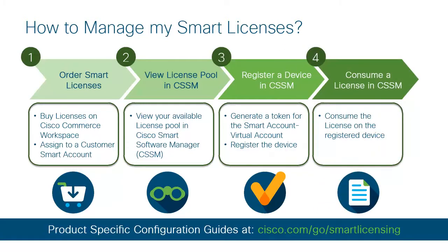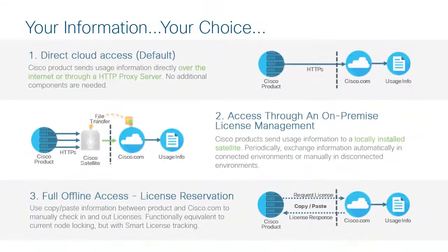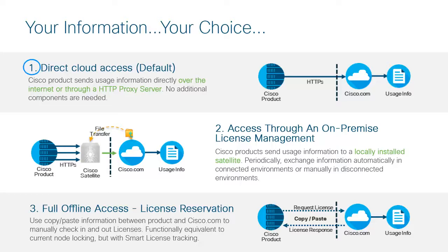After these steps are complete, you are ready to consume the license on the registered device. Remember, because of the concept of license pooling, a single token can be used to register as many devices as required. There are different communication options for different security postures. The primary communication method is direct cloud access, which is the default mode in which the Cisco product sends usage information directly over the internet or through an HTTP proxy server. The other options are satellite and license reservation.